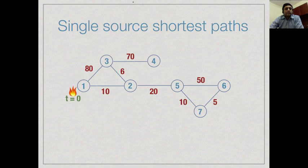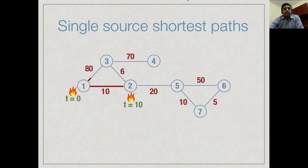We begin by setting fire to the source vertex at time 0. Fire starts going along edge 1-3 and edge 1-2. Since edge 1-2 is shorter, vertex 2 burns at time 10. At this point there is only a partial fire from 1 to 3 — it has travelled only 10 out of 80 units. At t=10, vertex 2 burns, and this is the shortest distance to vertex 2.